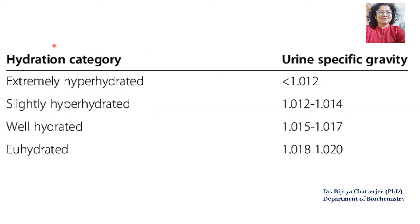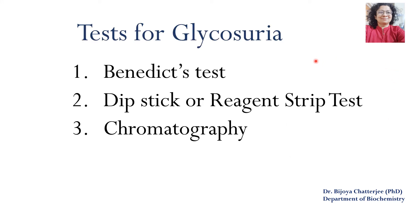A very dark urine indicates severe dehydration, whereas almost colorless or mildly colored urine shows a well-hydrated person's urine. Hydration category also influences the specific gravity of urine — refer to the link in the description for details. The tests for glycosuria are the Benedict test, the dipstick or reagent strip test, and chromatography. The first two types of tests will be discussed here; chromatography will be covered in another lecture.